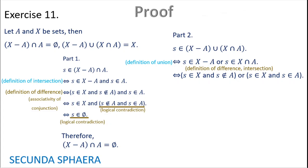Now comes a somewhat tricky step: we are going to use distribution of conjunction, but backwards as it is often used. Watch what is showing on the screen — distribution is being applied backwards. So the last statement, S is in X and S is not in A or S is in A — if we distribute S in X to that disjunction, we get the expression above. We use distribution of conjunction backwards. At this moment we can use simplification, getting just one term of the conjunction: S is in X.